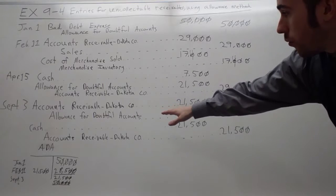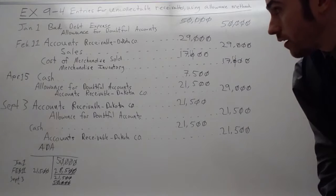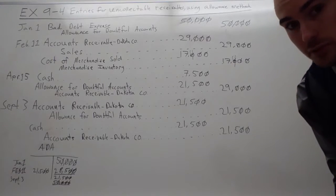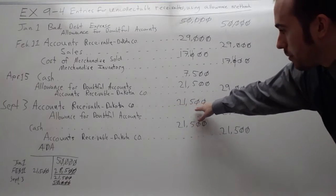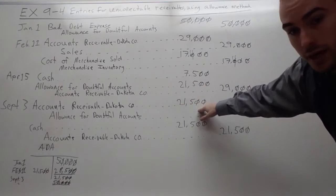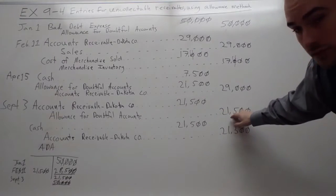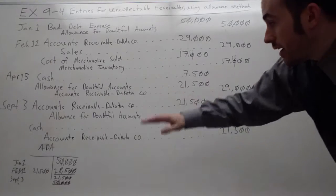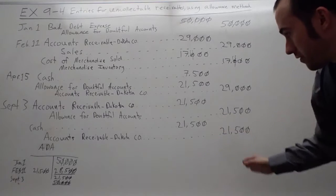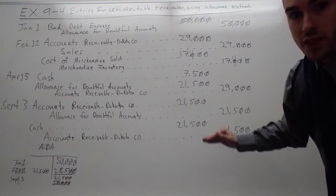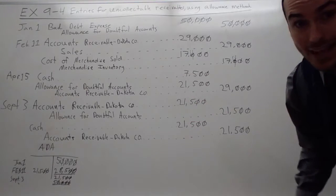Now, September 3rd, we were actually able to get the rest of the money. They actually were able to pay the rest. I don't know why they couldn't before, but good thing they at least could do it now. So, Accounts Receivable Dakota Company, we reinstate what we wrote off, $21,500, before we take the cash. And then we credit allowance for doubtful accounts for the $21,500. Then we debit the cash for $21,500 and take off the accounts receivable for $21,500. So there's a step when we reinstate. We first put their account back on the books, take it out of the allowance for doubtful accounts, and then we take the cash.